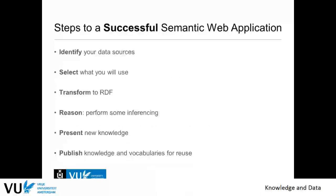So we build a semantic web application, and that involves several steps to make it successful. For starters, you look at what data you need for your application and make a selection from that. And if the data is not yet RDF, then you transform it to RDF. There are several tools and methods for this, and we will provide these tools and methods in due time. We want to do some inferencing, answer some questions, and present some new knowledge. Then if we have this knowledge in your application, publish it so that people can reuse it in the spirit of the semantic web.